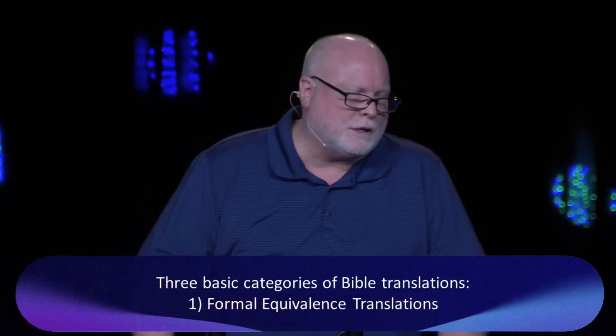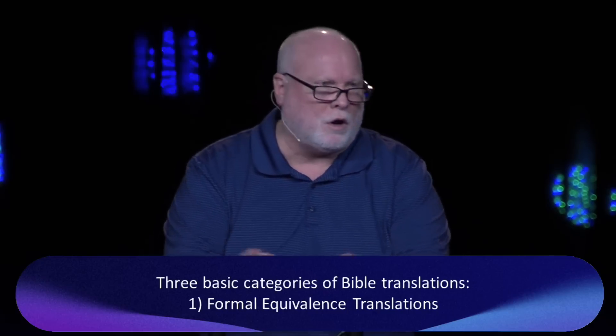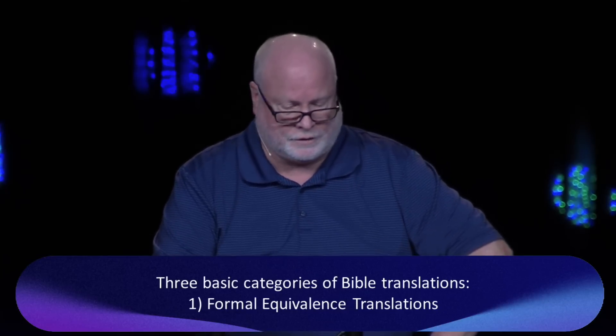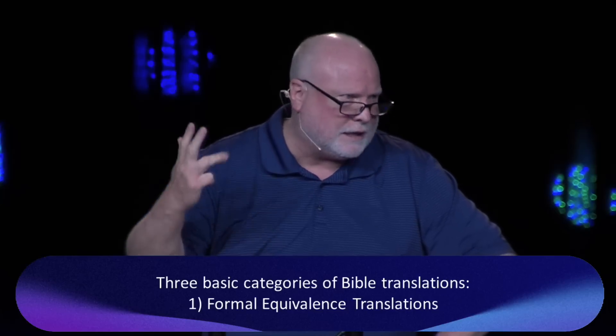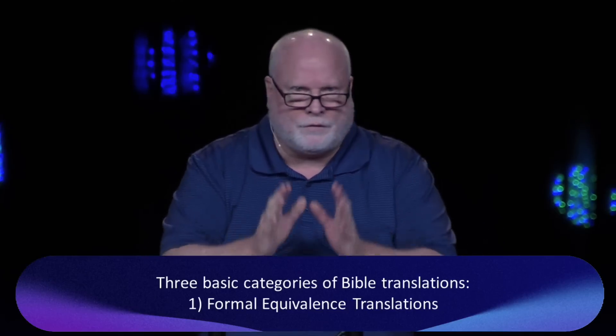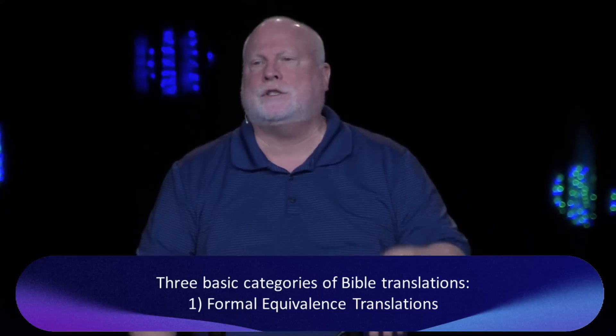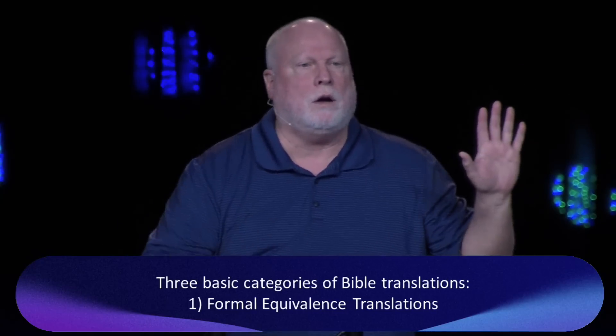The first category is called formal equivalence translations. Some call them literal translations because they're word-for-word translations. The King James Version, the New American Standard, the ASV, the ESV, etc. — all of those are word-for-word translations. When they take the original language, whether it's Greek or Hebrew, they take one word and find a word in English that means the equivalent, the very same. Sometimes that's tough to do. The King James Version and the New American Standard are the ones most Christians use if they want a word-for-word, or literal, translation.